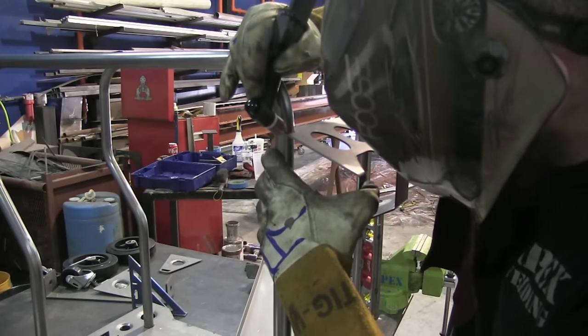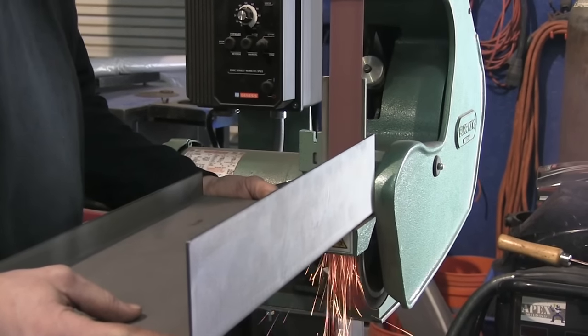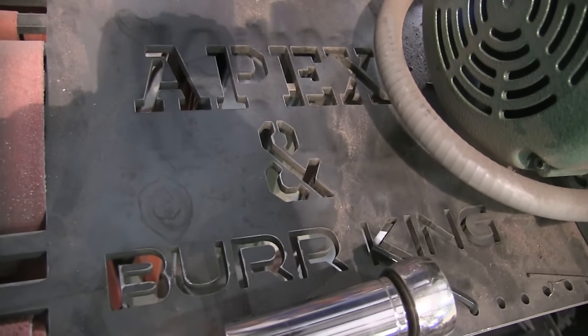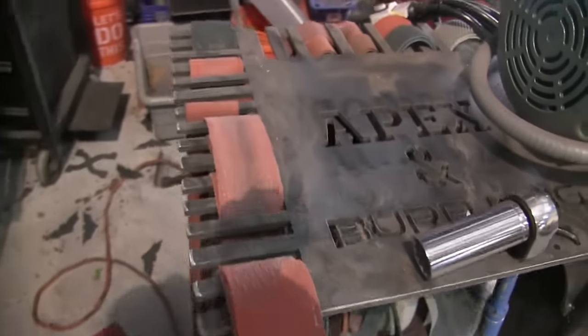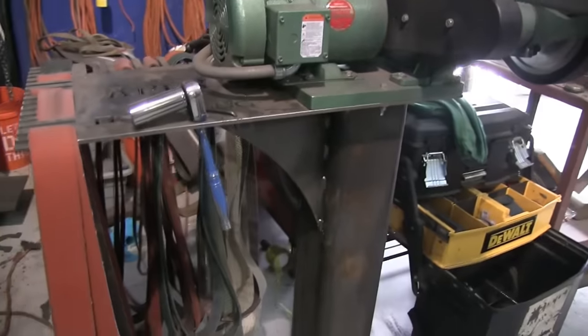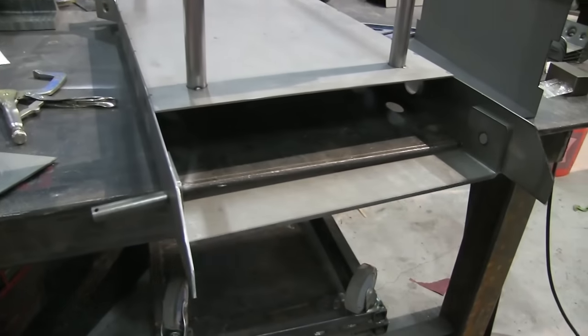and hold the part with one hand, hold the TIG torch with the other, press the trigger, and boom, you got a tack. This is the Burr King that JD bought at Fabtech, the last Fabtech, and he made this stand using the plasma cam. Holds all of his belts with the little finger dealies there and it's a nice little setup. Super nice sander.